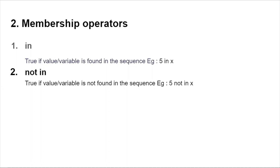Next we have membership operators. There are two types: in and not in. in returns True if the value or variable is found in the sequence — for example, 5 in x: if the value 5 is present in x, it will return True, otherwise False. not in returns True if the value or variable is not found in the sequence — for example, 5 not in x will return True if 5 is not present in x.